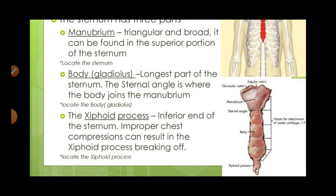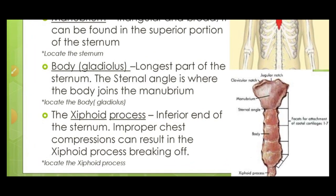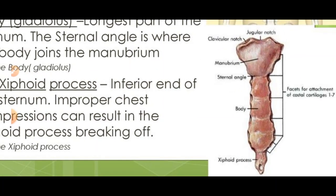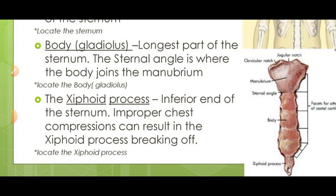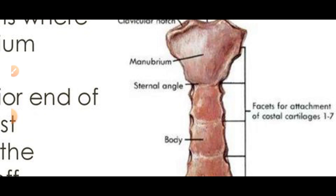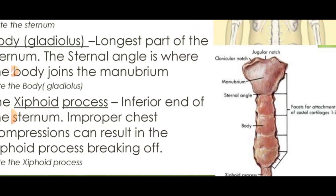The manubrium is present in the superior portion of the sternum. The second part is called the body — the middle portion of the sternum. The body is the largest part of the sternum. The sternum angle is where the body joins to the manubrium — also called the angle of Louis.